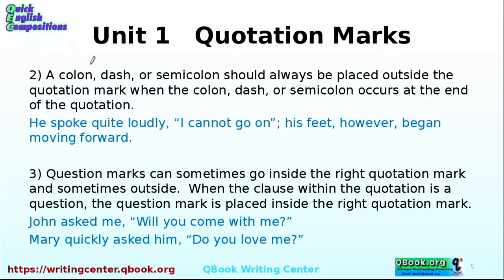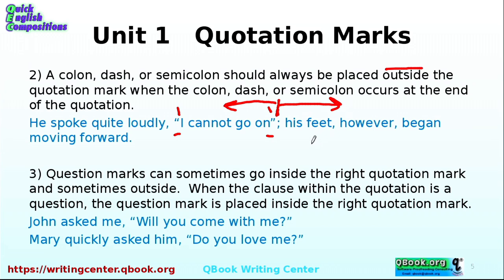How about a colon, a dash, or a semicolon? They should always be placed outside the quotation mark when they occur at the end of the quotation. For example: "He spoke quite loudly, 'I cannot go on'; his feet, however, began moving forward." The quotation is "I cannot go on" — the semicolon goes outside because before it is an independent clause, and after it is an independent clause. Note: one space after the semicolon, no space before.